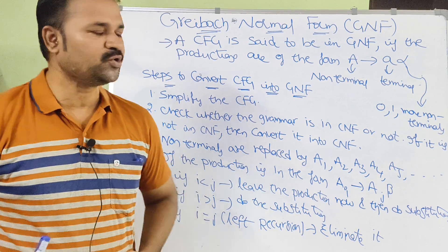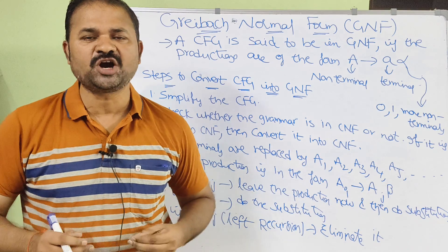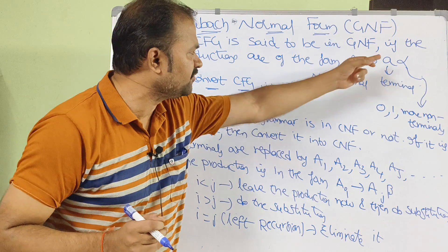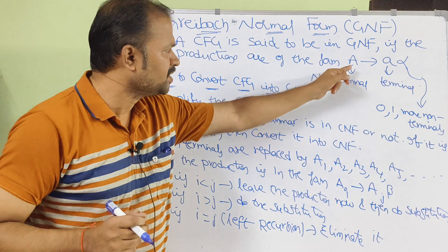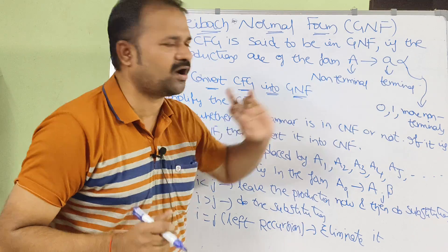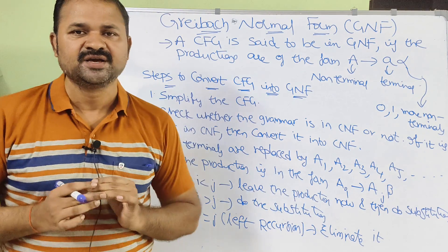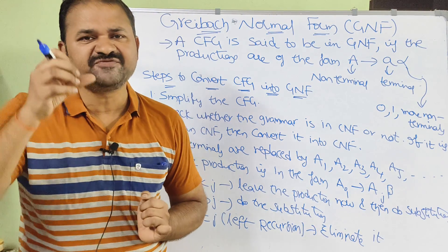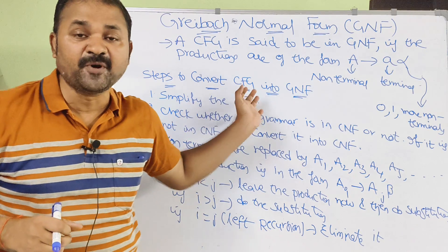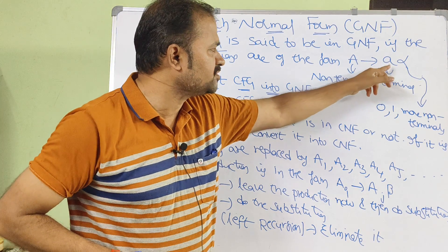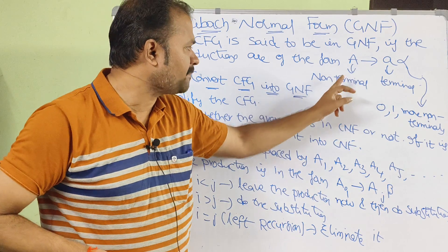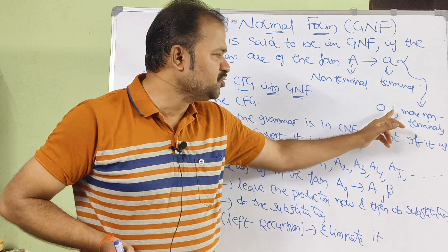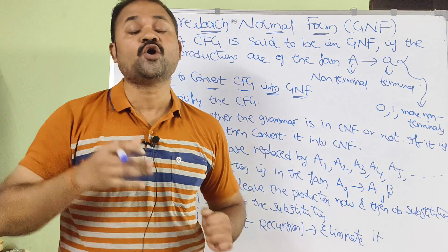Now let us discuss Greibach Normal Form, in short GNF. A CFG is said to be in GNF if the productions are of the form A produces a-alpha, where A means non-terminal, a means terminal, and alpha means zero or more non-terminals.